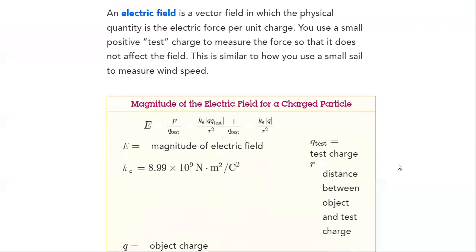We will define it as we used to using equations. Magnitude of the electric field for a charged particle is equal to the force divided by Q test. Q test is a test charge that we have put in that field, how that will affect it. And we have KE, which is 8.99 times 10 to the power 9 newton meter square per coulomb square.